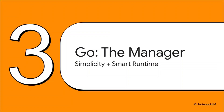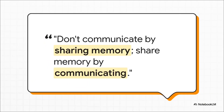Time for our second hero: Go. If Rust is that strict guardian, Go is the chill, pragmatic manager. Its philosophy is the total opposite — keep the language itself super simple, and let a really smart runtime system handle all the hard stuff behind the scenes. Instead of the chaos of everyone trying to access and change the same piece of memory at once, Go says: don't do that. Instead, have your different tasks talk to each other.